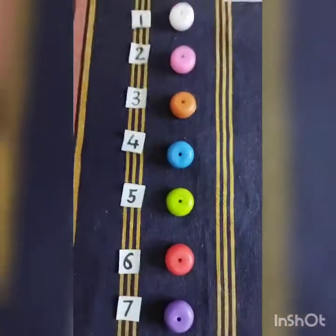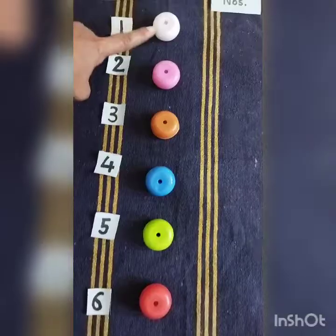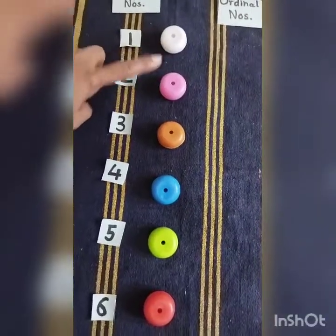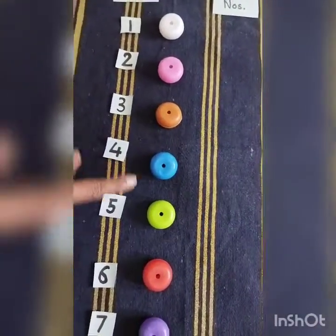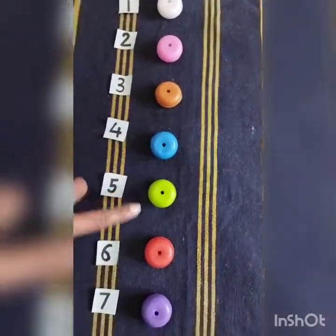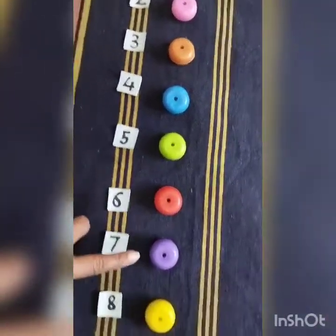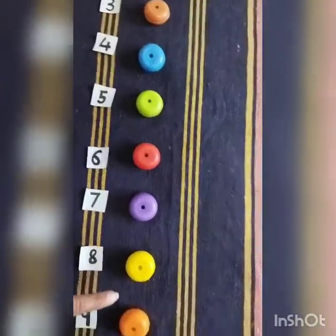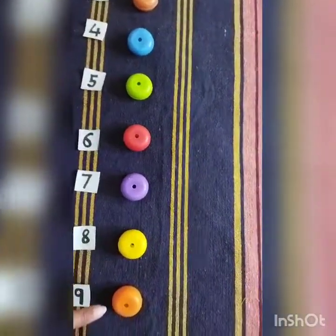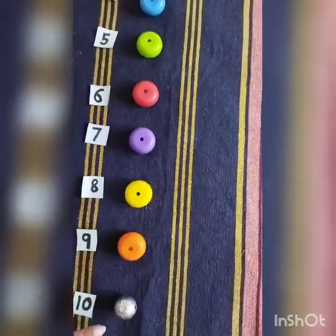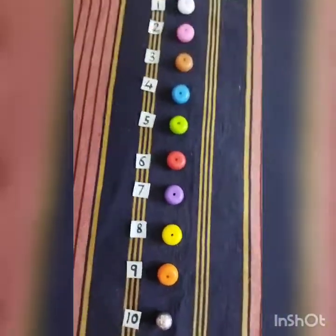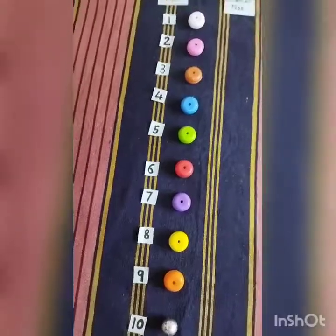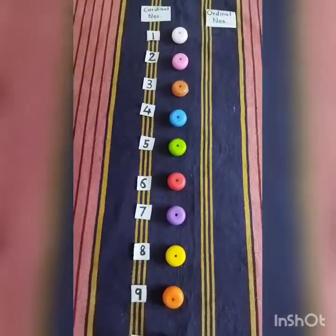So when we count the beads we will say 1, 2, 3, 4, 5, 6, 7, 8, 9 and 10. So these are the cardinal numbers.